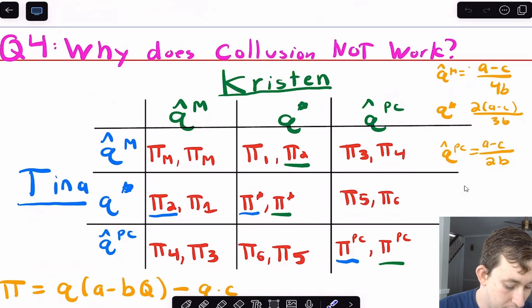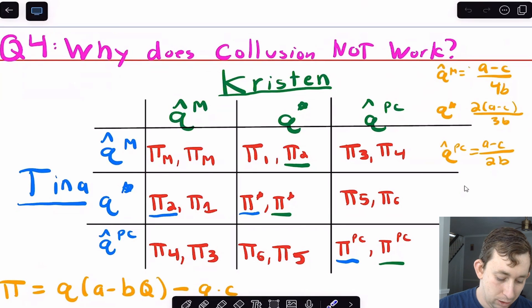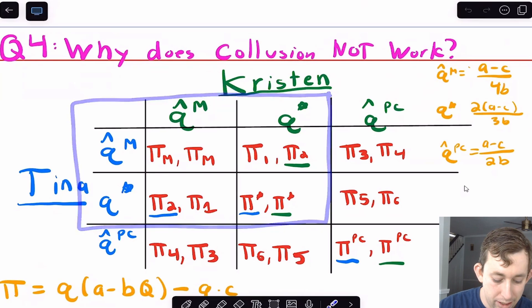Now, we are going to answer the fourth question, which is why does collusion not work? And in order to do that, we're going to set up a prisoner's dilemma. So notice you can imagine that Tina and Kristen each have three options in terms of the quantity that they're choosing, they're going to choose this simultaneously. So Tina can choose between making the monopoly quantity, as if they're competing quantity, or in perfect competition.